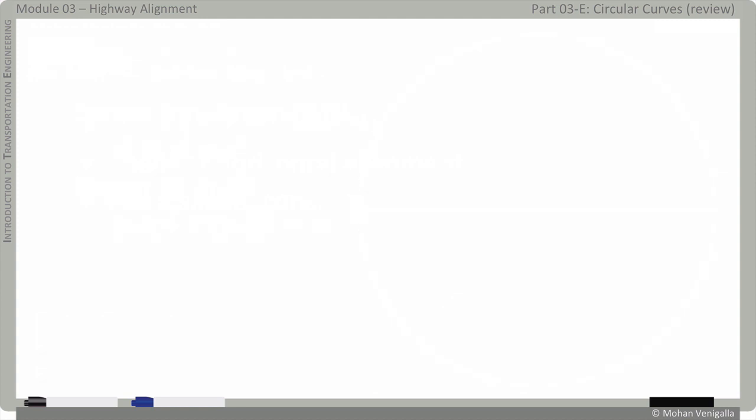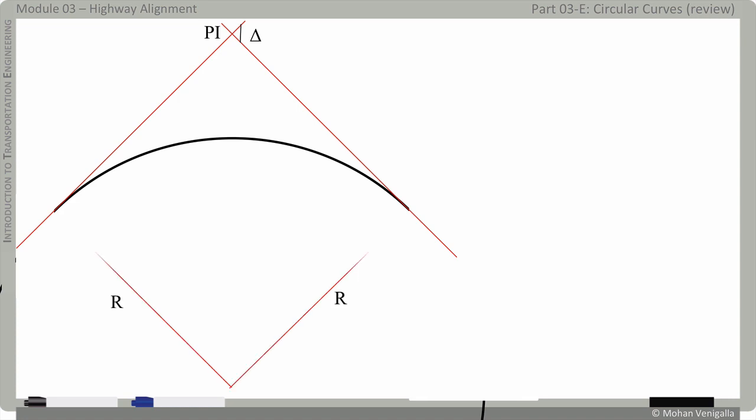Let's do a quick review of all the formulae that we need. Let's say here is a highway which is going in that direction which needs to be changed its direction there which is going to be at point of intersection PI and the deflection angle of delta and now we are going to insert a circular curve in between these two so that the change of direction happens all along this circular curve.